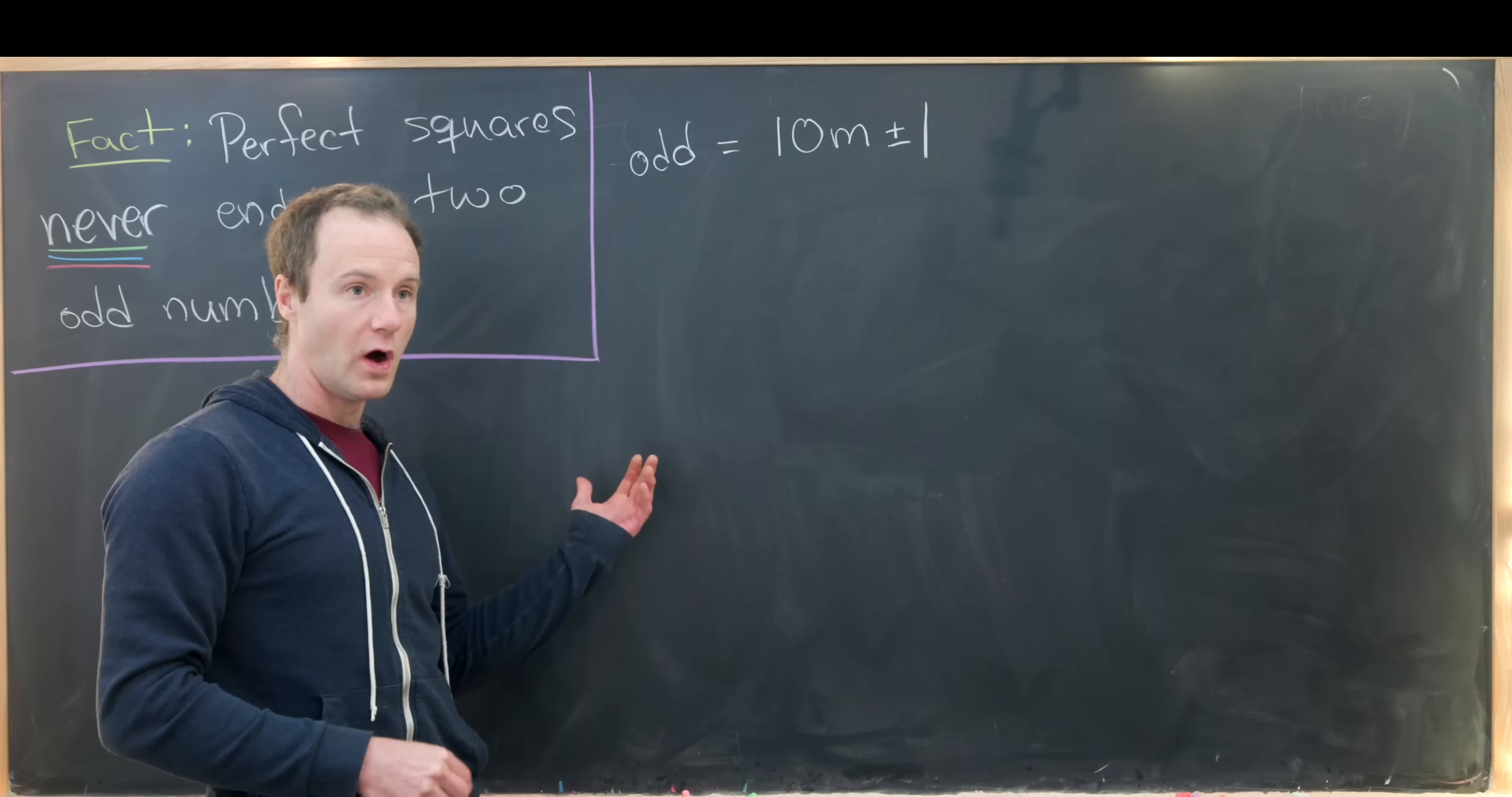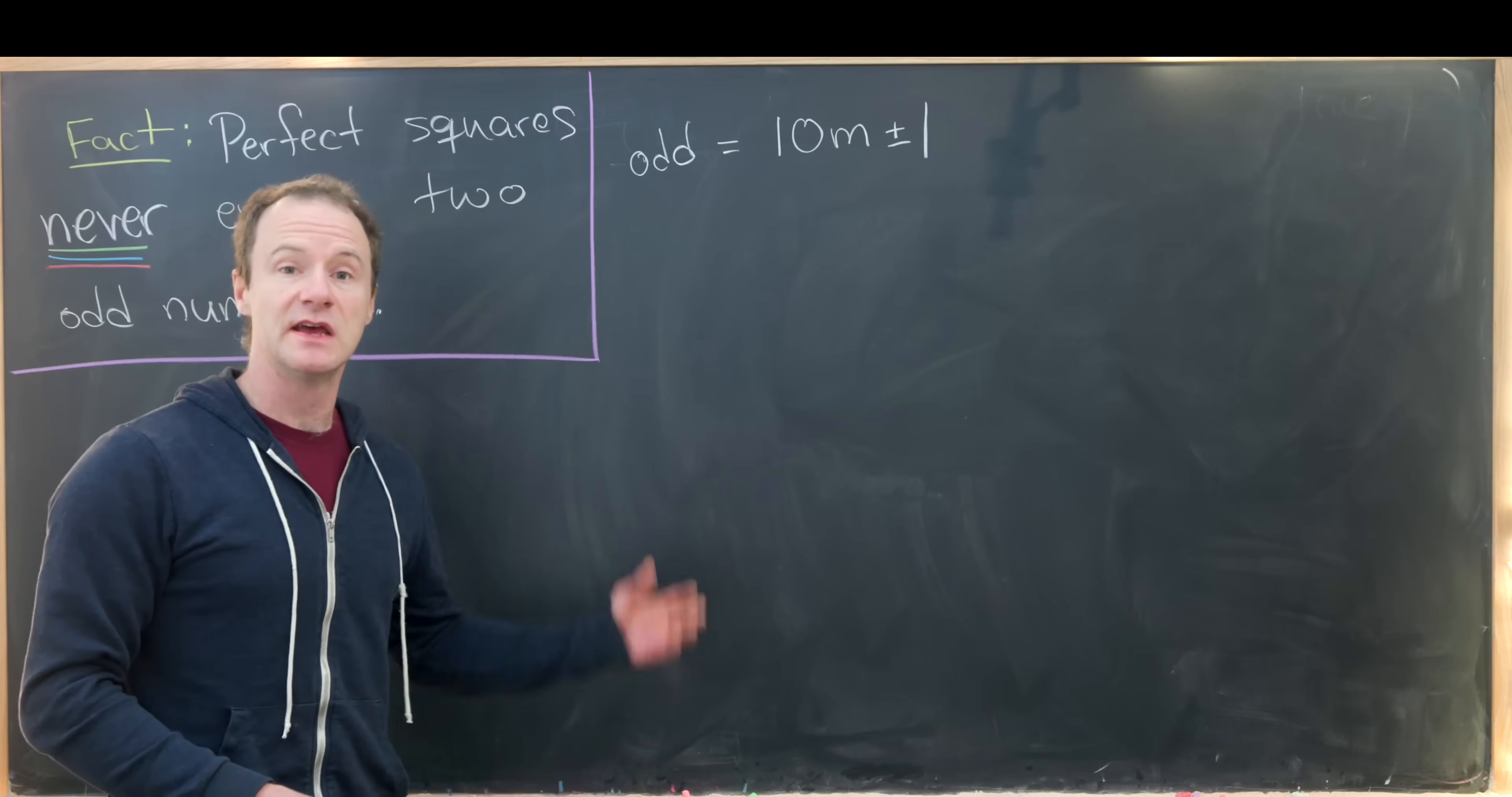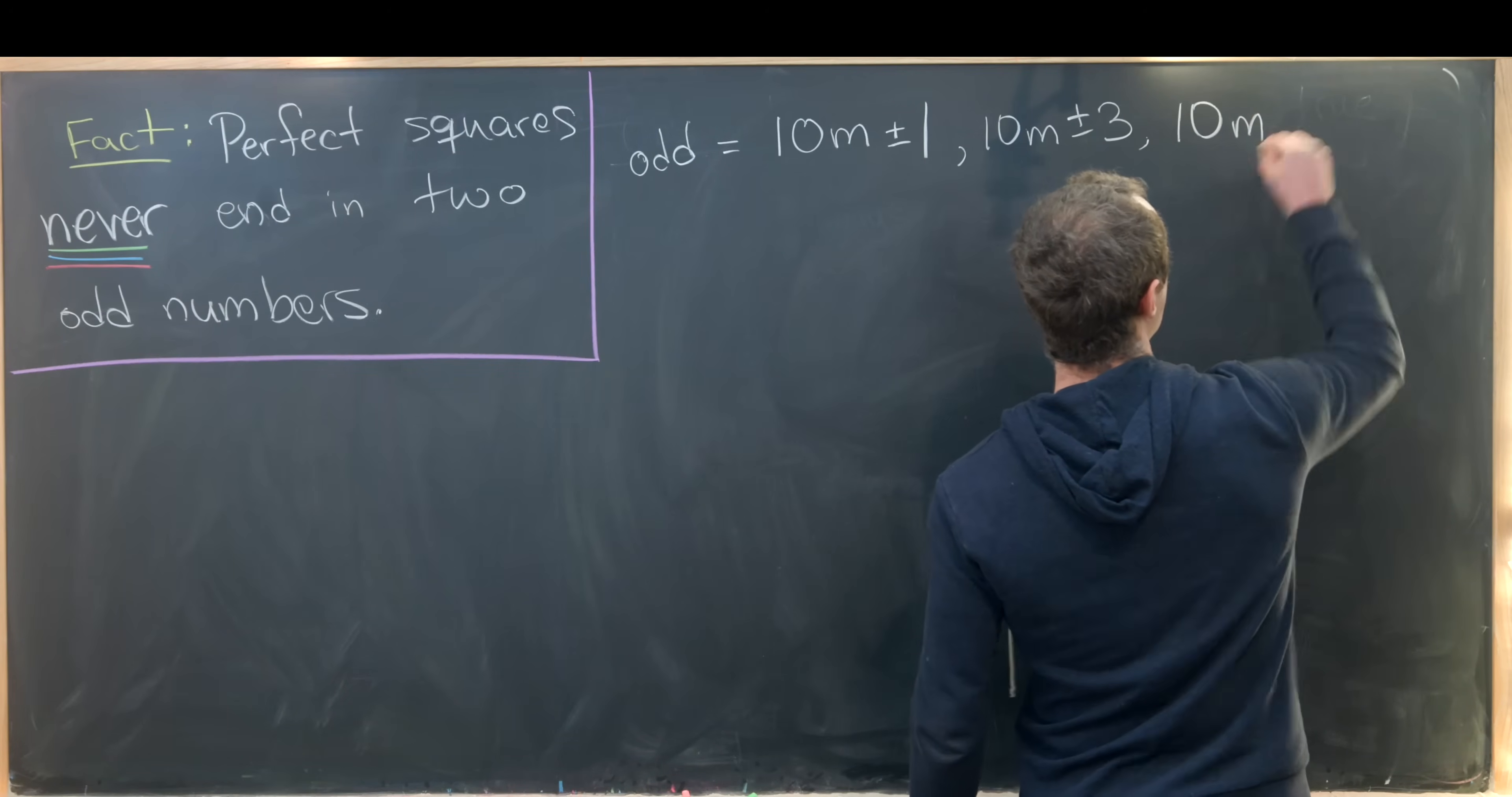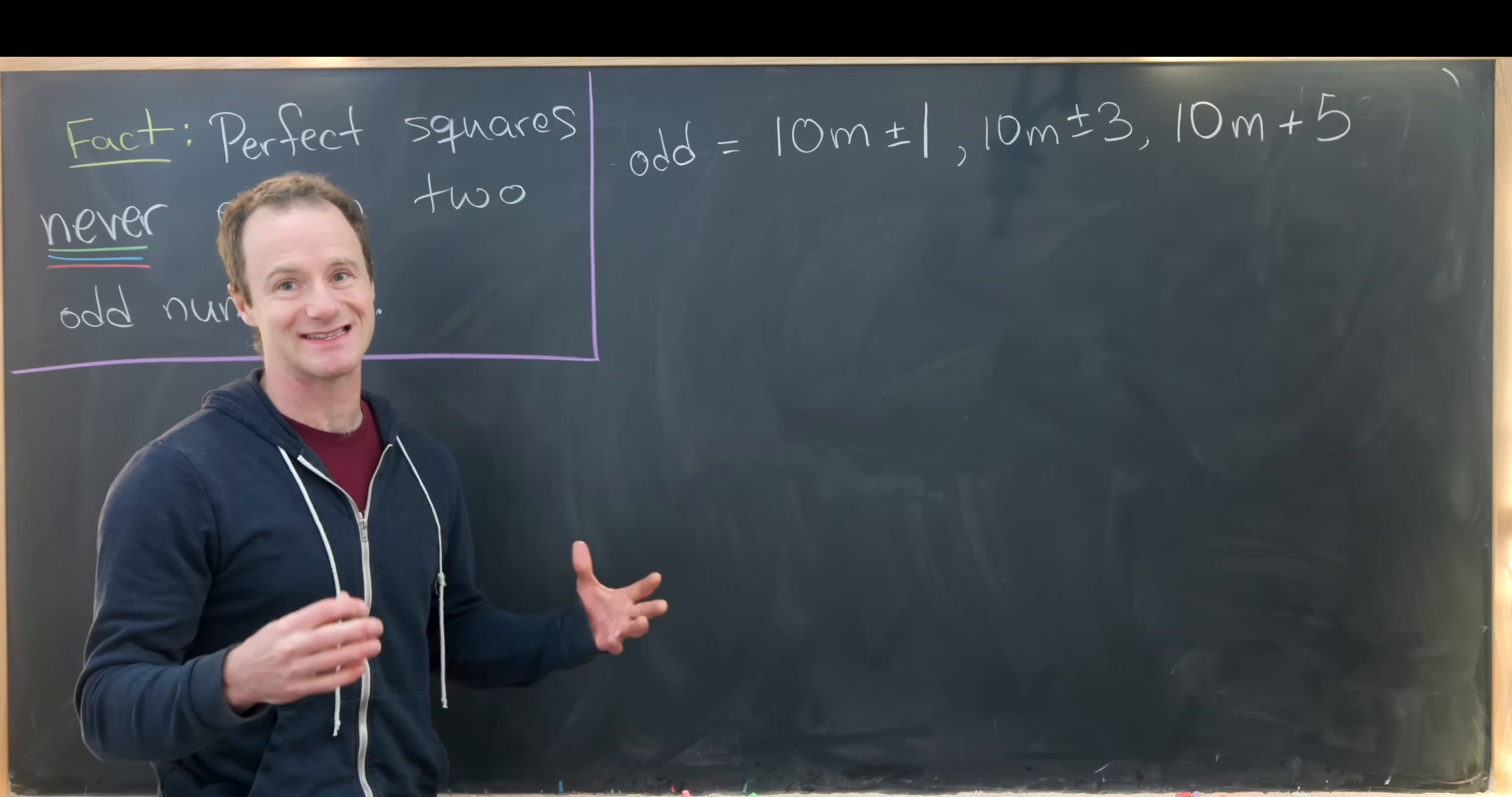So notice I'll just write any odd number can be rewritten as 10 times m plus or minus one. So that would be like one or 11 or 21 or 31 or nine, that's 10 minus one, 19, 29, so on and so forth. Or 10m plus or minus three or finally, 10m plus or minus five. But here we just need to work with the plus five case because the minus five case will give us the same numbers.